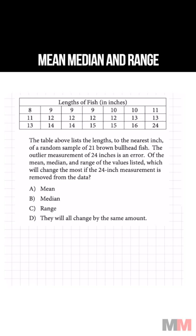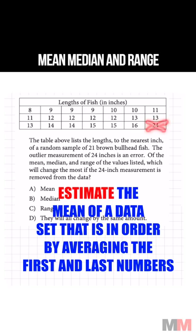Which of the following would change the most if this outlier is removed from the data set? Outside of this outlier, I calculated the mean by just taking the lowest number in the data set and the highest number, 8 plus 16, divided by 2, which is 12.